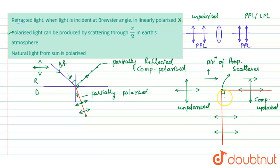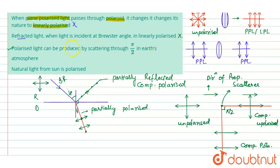The light scattered at π/2 (90 degrees) is completely polarized. If you analyze the light in any other direction between these two directions, the light is partially polarized. So statement three is correct — polarized light can indeed be produced by scattering through π/2 in the Earth's atmosphere. This is proved through the diagram.